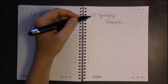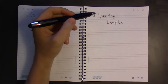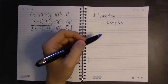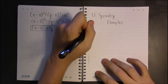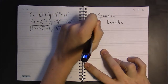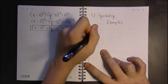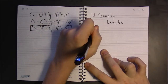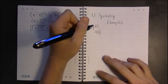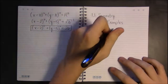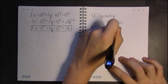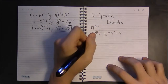Alright, so let's take a look at examples of symmetries of graphs. We're in section 1.1, on page 63 of the textbook. We did problem 42 in the last video, so let's look at problem 44. We'd like to test the symmetry of this graph.